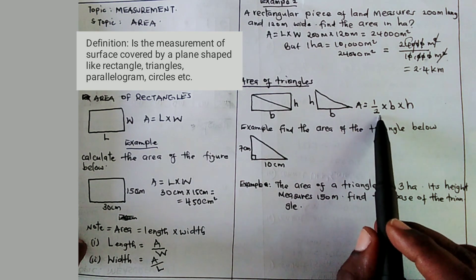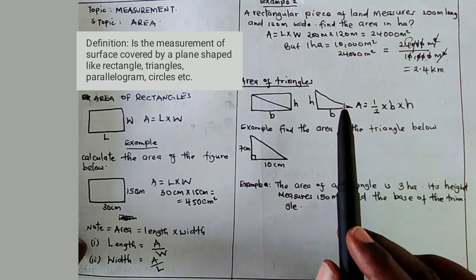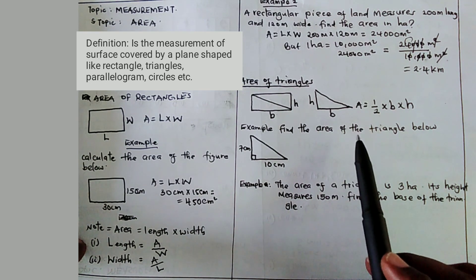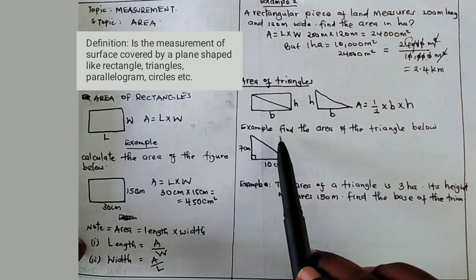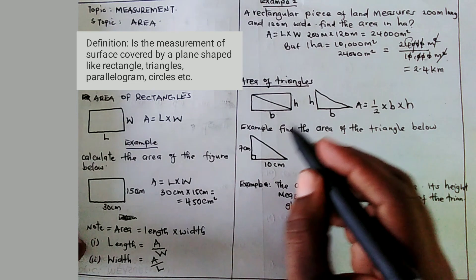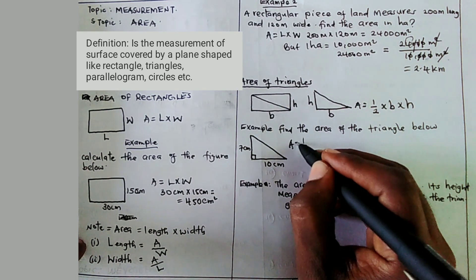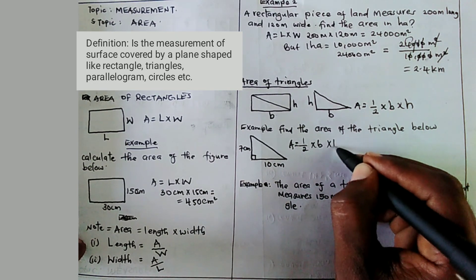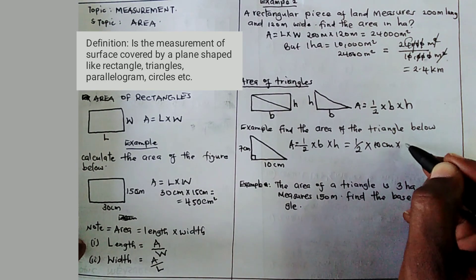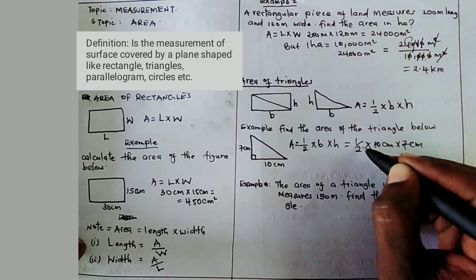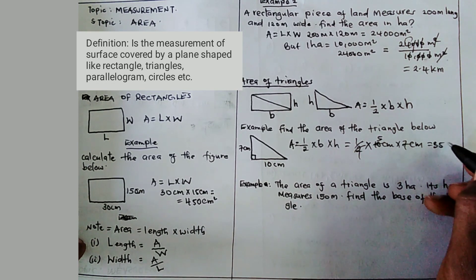Area is equal to one half times base times height. We say one half because a triangle is half of a rectangle — when you multiply base times height you divide by 2 to get the triangle's area. Example: find the area of the triangle below. Our base is 10 centimeters and our height is 7 centimeters. Area equals one half times 10 times 7, which gives us 5 times 7, that is 35 centimeter square.